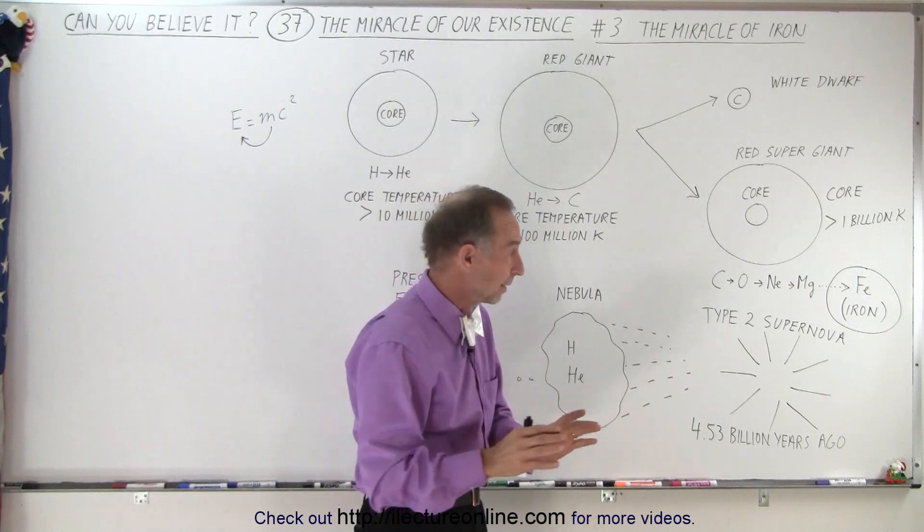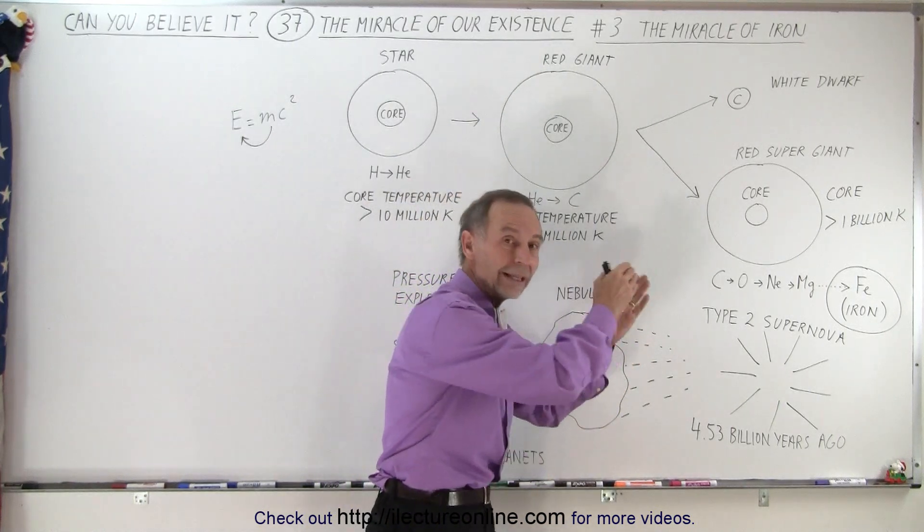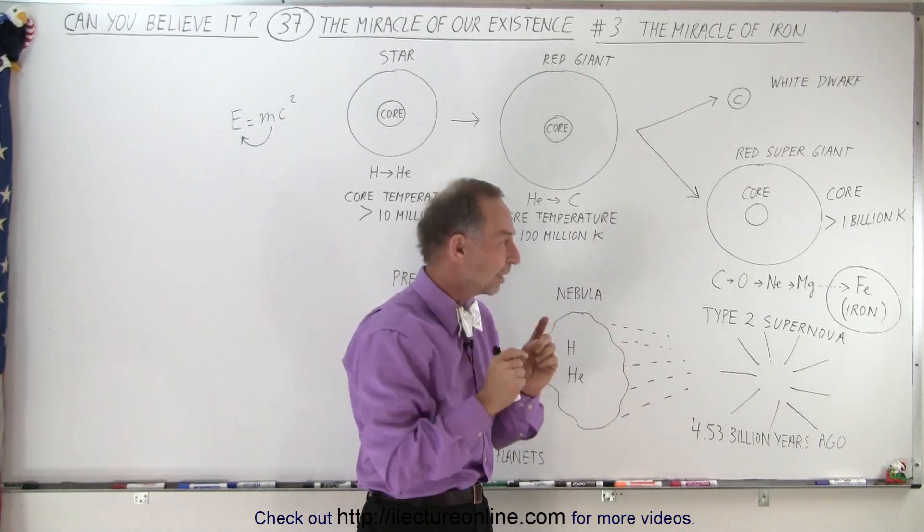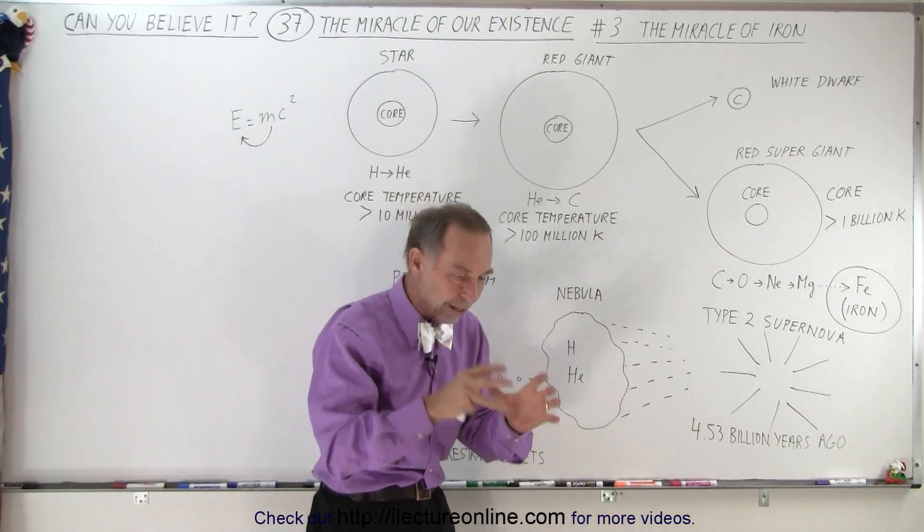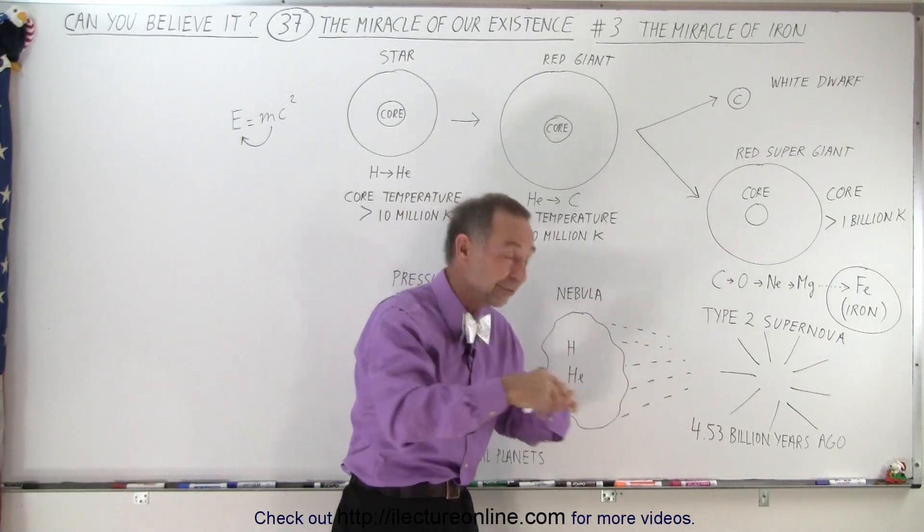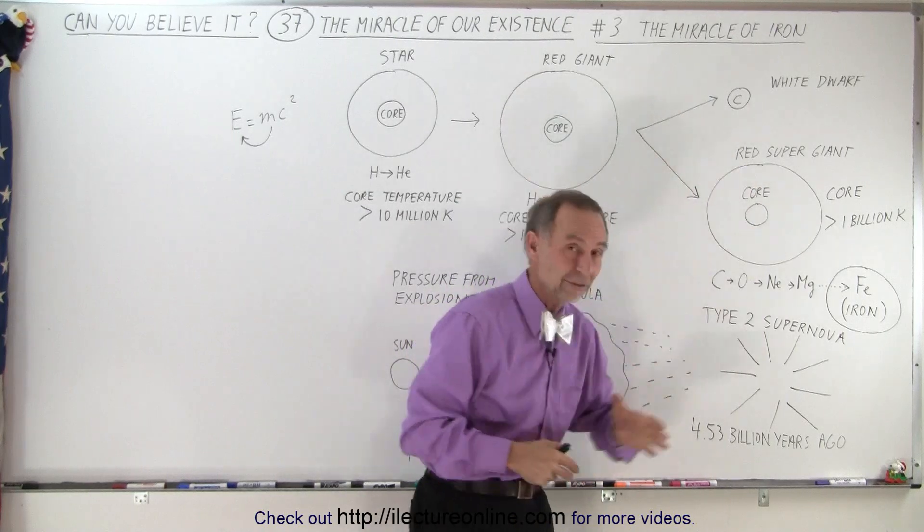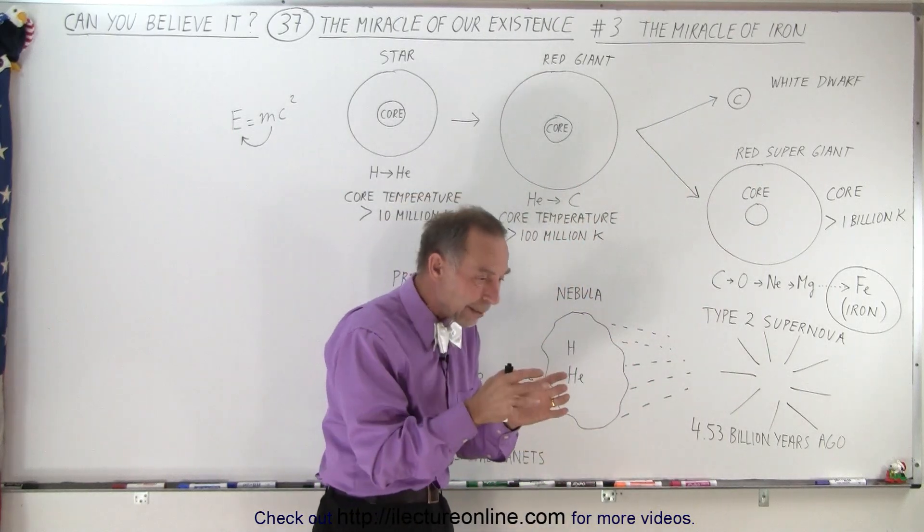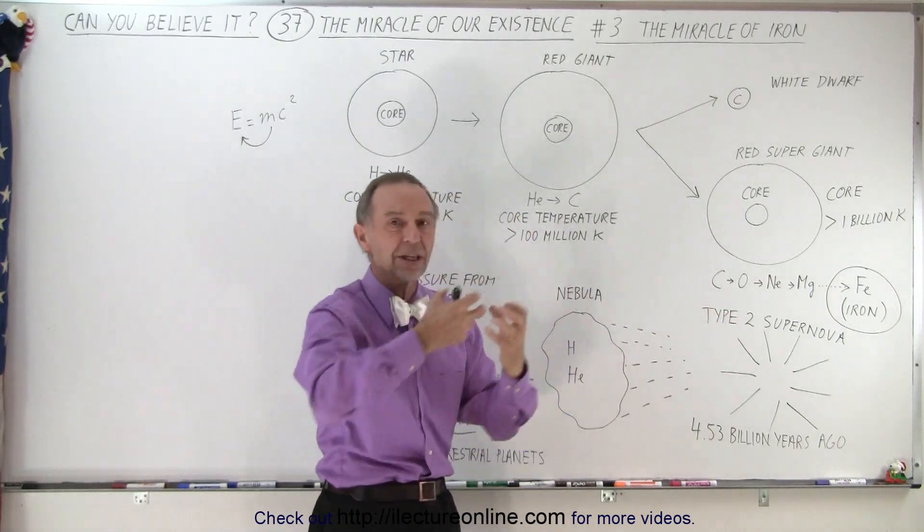But the problem is, well, not really a problem, the saving grace so to speak. Our existence depends on what is going to happen next. It turns out that iron is this unique element on the periodic table. When you try to fuse iron into the next heavy element, of course that only happens inside the cores of these supermassive stars. Well, when that happens, instead of generating heat, it actually extracts heat out of the core.